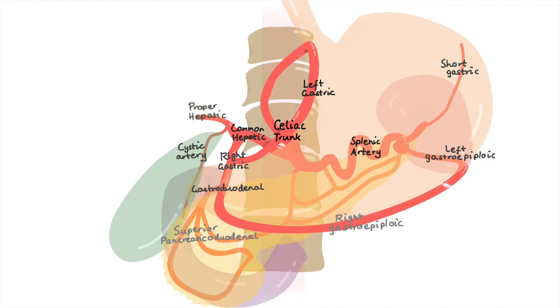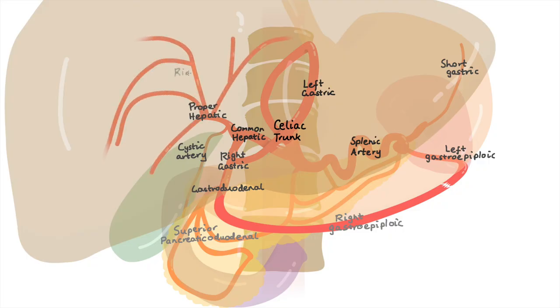which branches into right and left hepatic arteries. The locations and names of these arteries is logical if you consider the arrangement of viscera in the area.